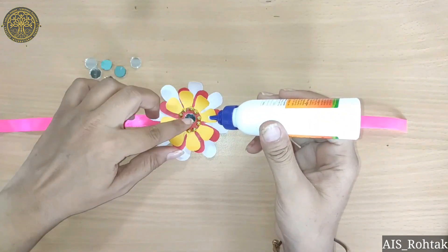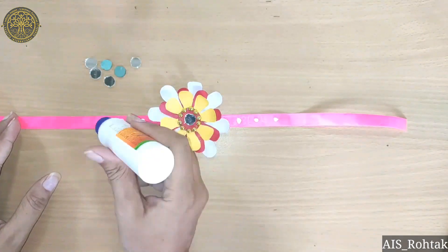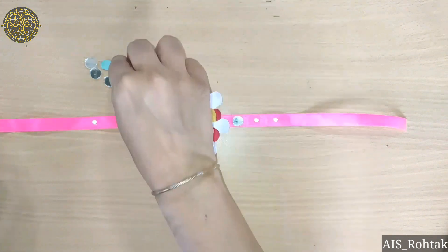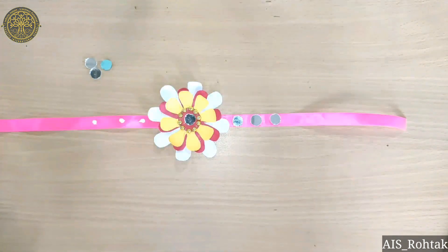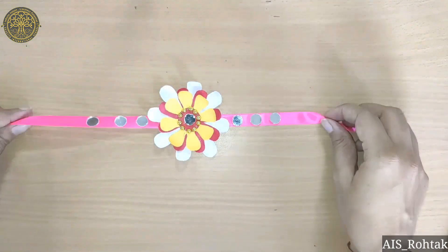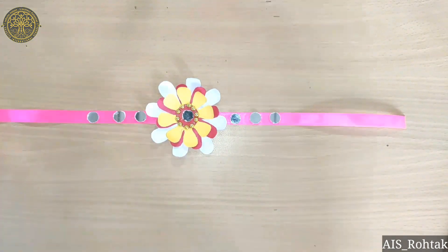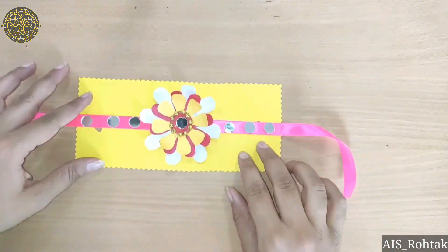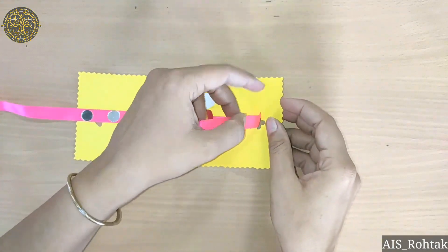Now I am pasting some mirrors. Now I am taking another color sheet. Like this, and on the sides we will punch it with the punching machine.